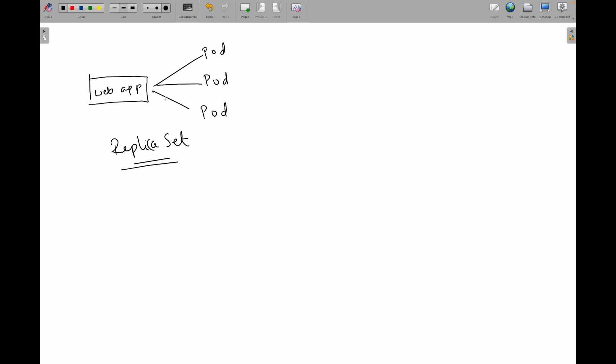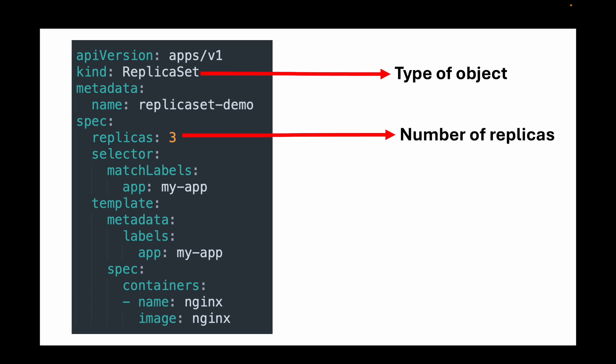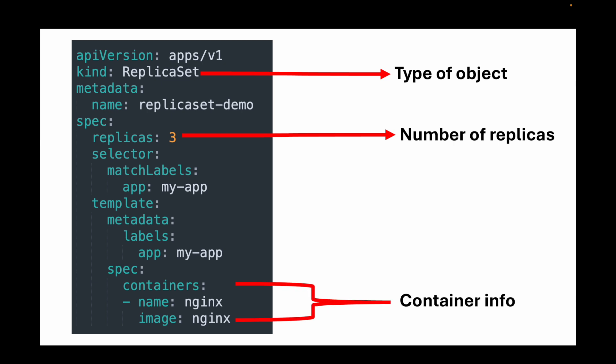Here is the example code for a replica set. We specify the kind of object as ReplicaSet, define replicas as three, and define the container information including the container image — nginx in this case. The replicas field ensures there are always three replicas of the nginx container up and running. Whenever you want a specified number of pods running, you can use replica sets.